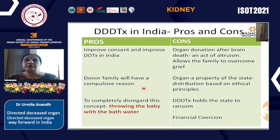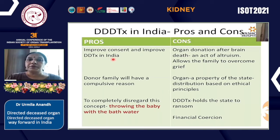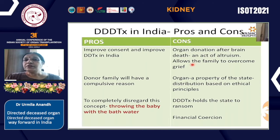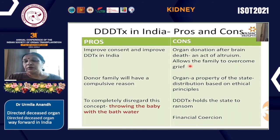What are the pros and cons of a directed deceased donor transplant program in India? The pros are that it will improve consent and improve the deceased donor transplant program. The donor family will have a compelling reason to consent. To disregard this concept completely, as Dr. Sovash Gupta says, is throwing the baby out with the bathwater. Organ donation at brain death is an act of altruism that allows the family to overcome grief. However, India believes the organ is a property of the state and should be distributed based on ethical principles, whereas a directed program holds the state to ransom when the donor family consents only if organs go to a specified recipient.